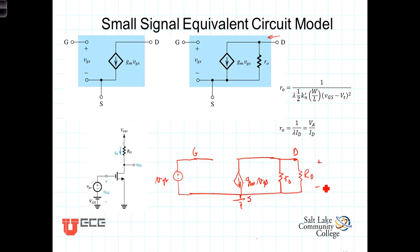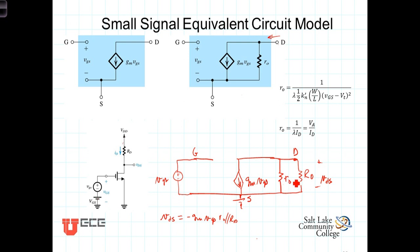We can now calculate VDS, which is the output voltage for this configuration. VDS — the small signal component of the drain voltage — is equal to negative G sub M times VGS, but now we've got the resistors in parallel with each other, so it's times R0 in parallel with R sub D. Including R0 places it in parallel with R sub D, thus reducing the effective resistance at the drain. So including the channel length modulation term, the gain is slightly smaller than it was without it.